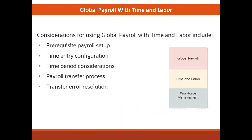Our objective is to get time and labor integrated with the global payroll application so we can get everyone paid accurately. That means our time and labor inputs — hours worked or hours taken — have to be convertible to earnings elements or deduction elements on the payroll side. That involves these considerations among others for prerequisite setup: how time entry is configured, what time periods we are using for time entry versus payroll processing, the payroll transfer process of calculated time going from time and labor to pay, and how we are going to resolve any errors that may occur during that transfer.